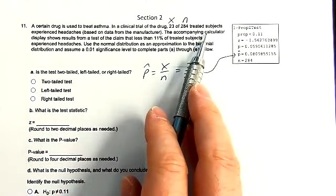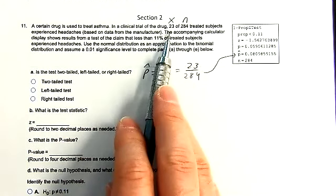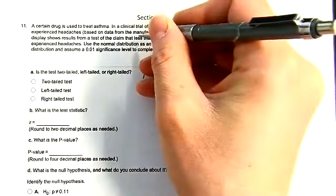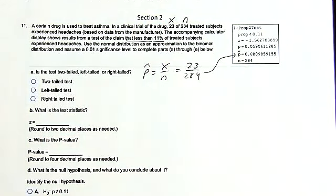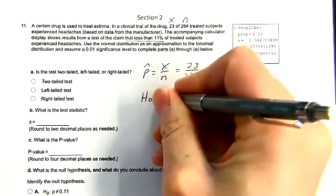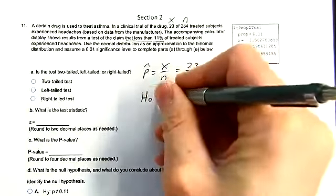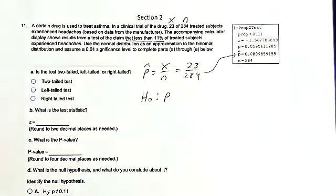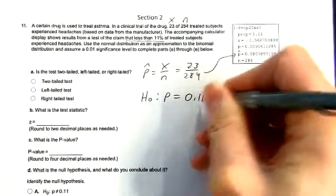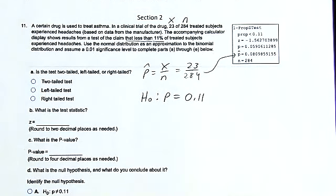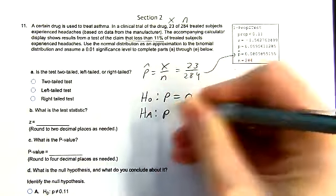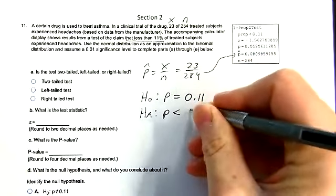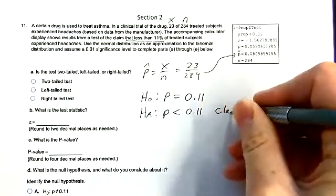The claim is that less than 11% of treated subjects got a headache. Here's how we set up the hypothesis test: the null hypothesis is that the proportion of people getting headaches equals 11%. The alternative HA — their claim — is that the proportion is less than 11%.